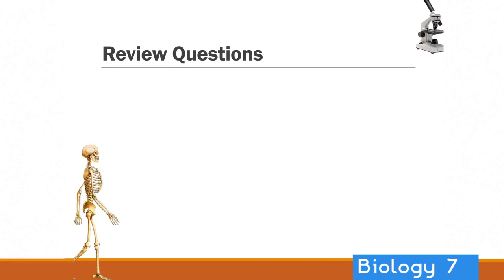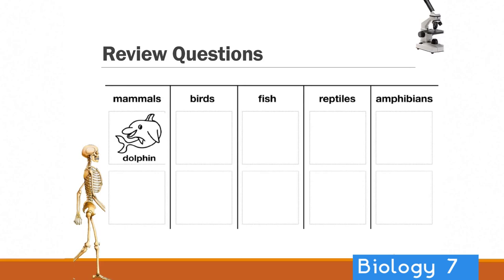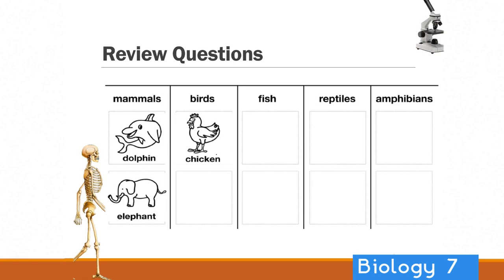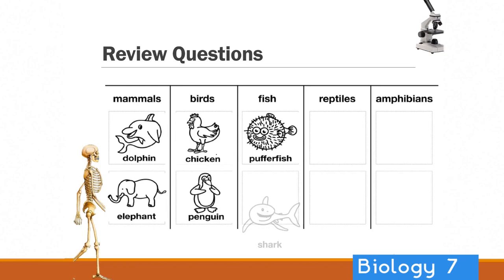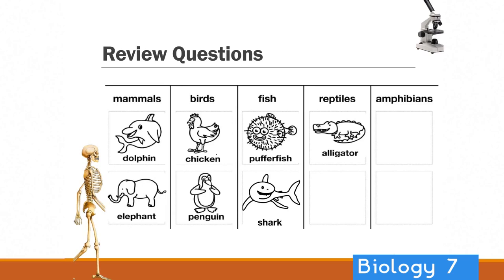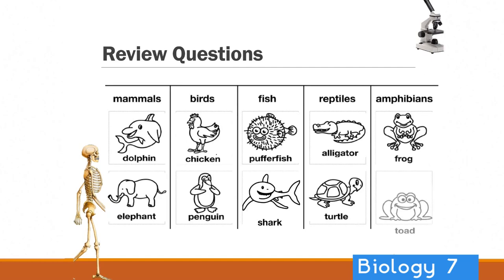The dolphin is a mammal — it's got lungs and breathes air. Elephant is also a mammal. Chicken is of course a bird, and so is a penguin. Fish: pufferfish — that's an easy one. Shark is also a fish. Alligators are reptiles, so is a turtle. Frogs are amphibians and a toad is also an amphibian.